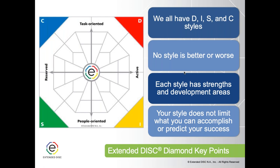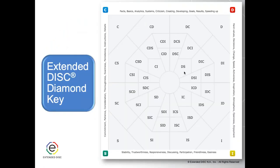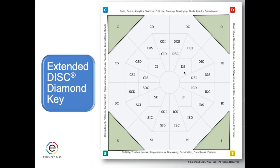In a one-hour DISC introduction you might help participants identify which quadrant they're in — D, I, S, or C. In a one-on-one coaching session you can go deeper, and the Extended diamond helps you do that. In the diamond, each quadrant has 40 different specific DISC styles, so in total we have 160 DISC profiles mapped on this diamond. Each location on the map corresponds to a specific type of profile. At the outer corners we're talking about what we call a one-style or 100% individual.